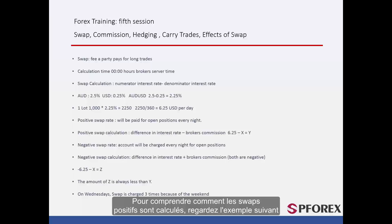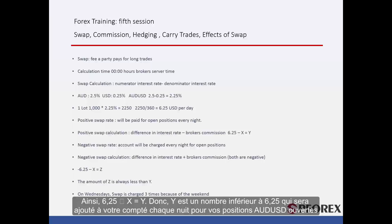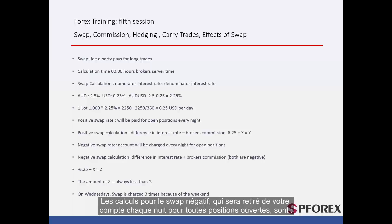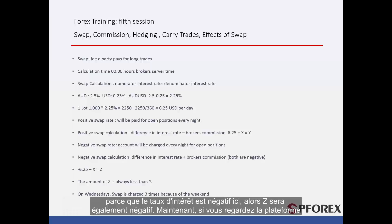To understand how positive swaps are calculated, the difference of interest rates — in this case Australian against US dollars — as we calculated before, is 6.25 minus x, which is the broker's cut, which equals y. Thus, 6.25 minus x equals y. So y is a number less than 6.25 that will be added to your account every night. For the negative swap, which will be withdrawn from your account every night, the difference in interest rates is 6.25 minus the broker's cut, meaning 6.25 minus x equals z. And because the interest rate is negative here, z will also be negative.